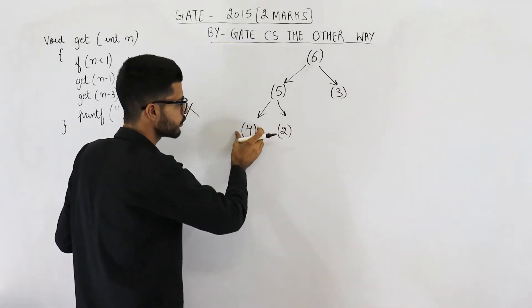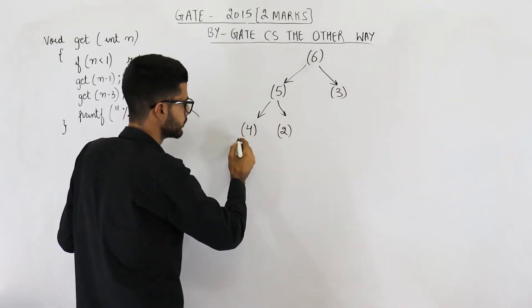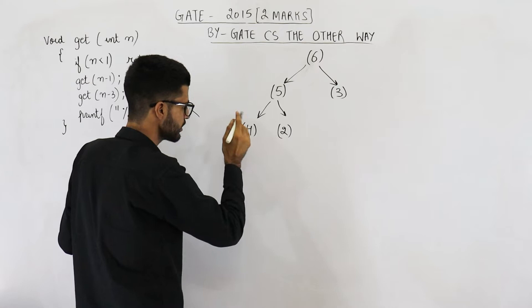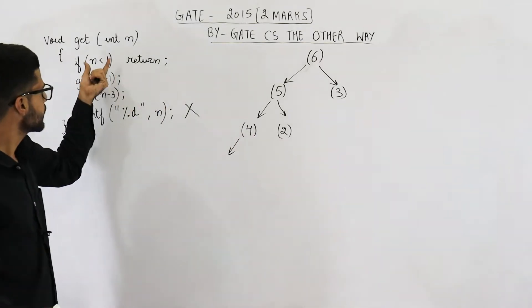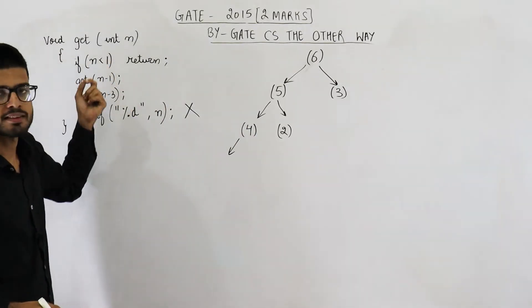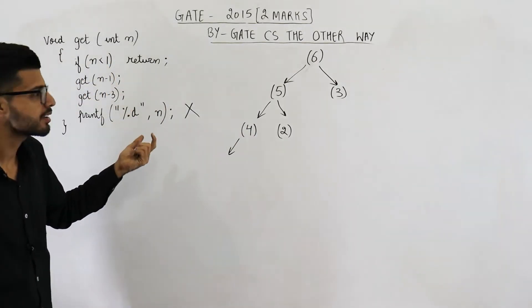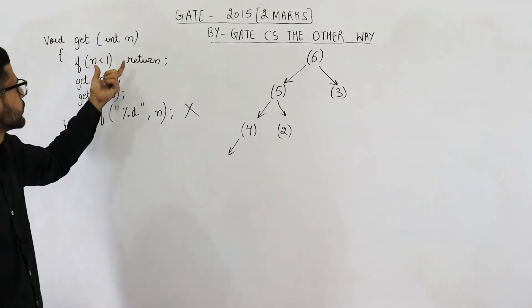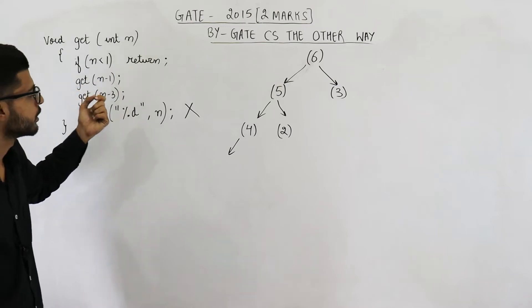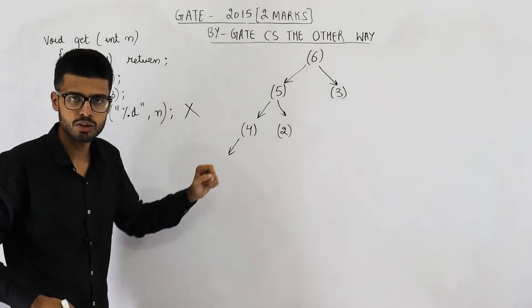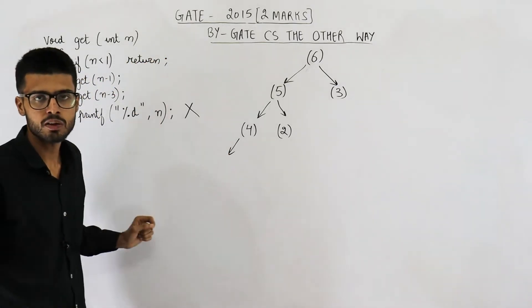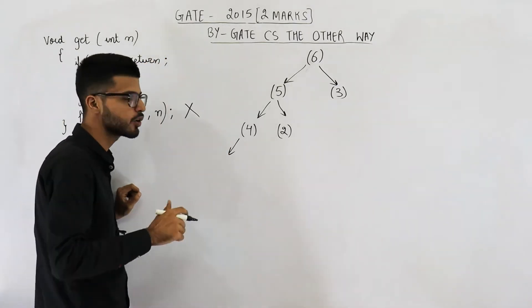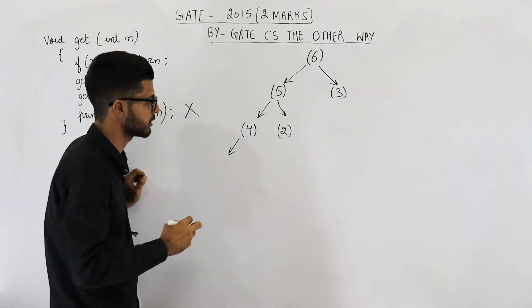Then what is get(4) going to do? This function will check if 4 is less than 1. That is not true — 4 is actually greater than 1, hence you will not return. Instead you will make two more function calls.